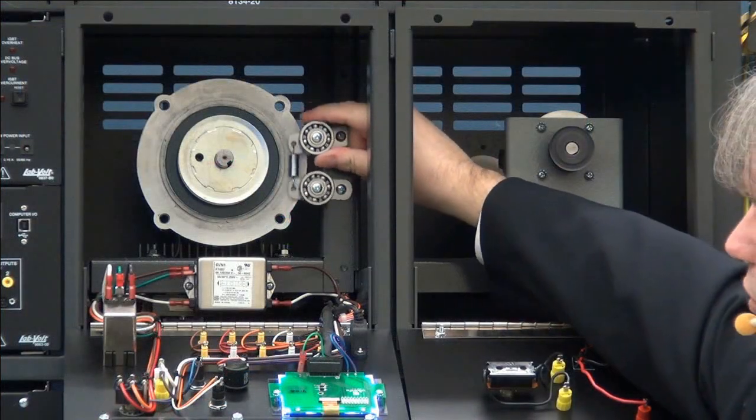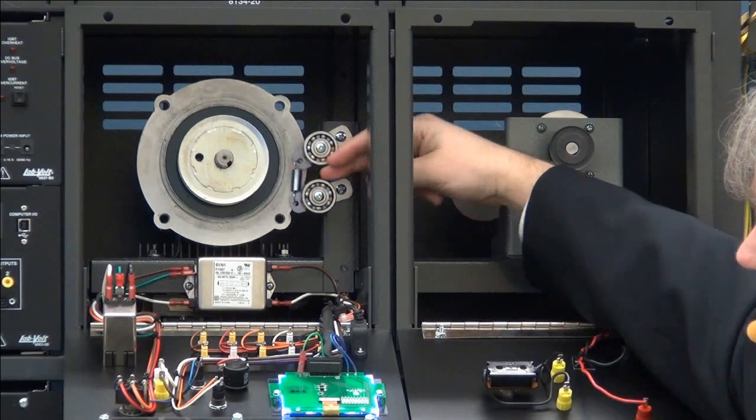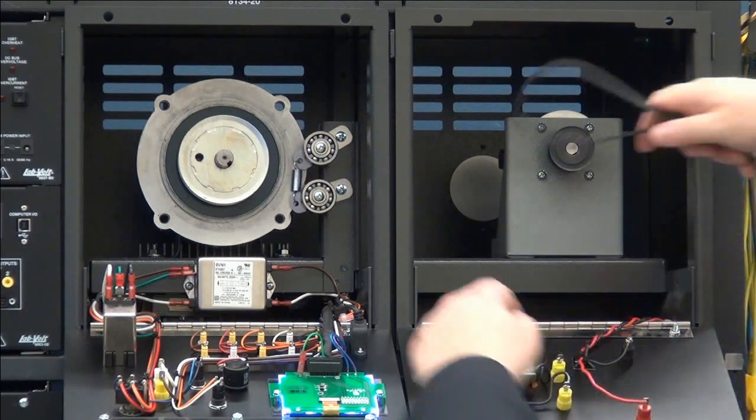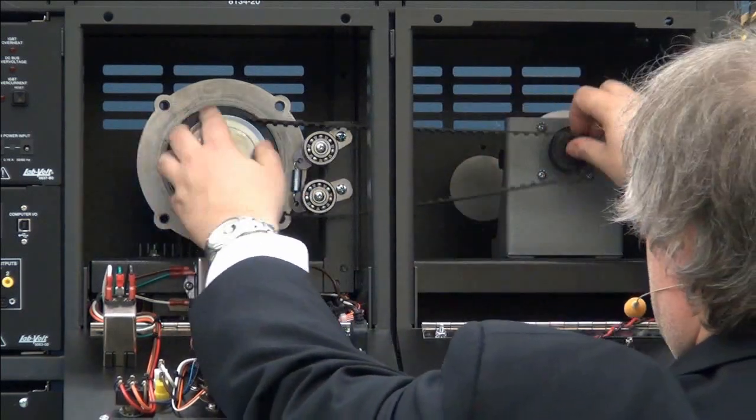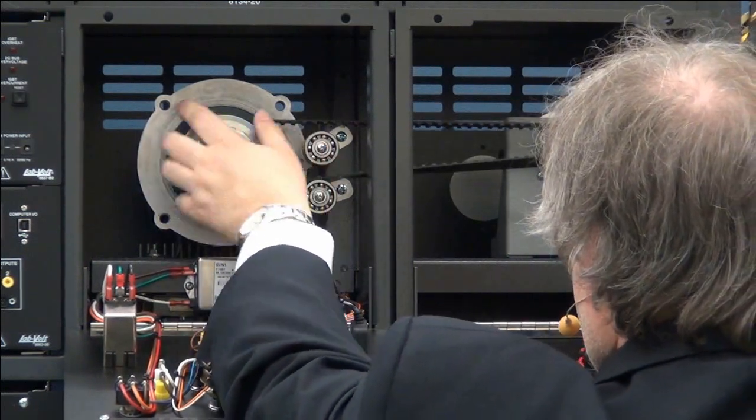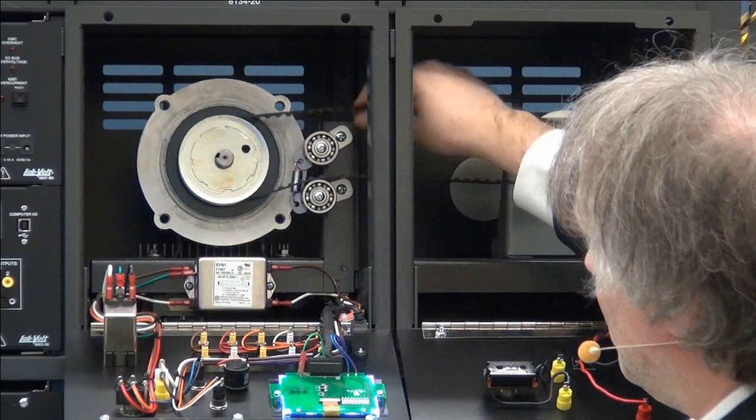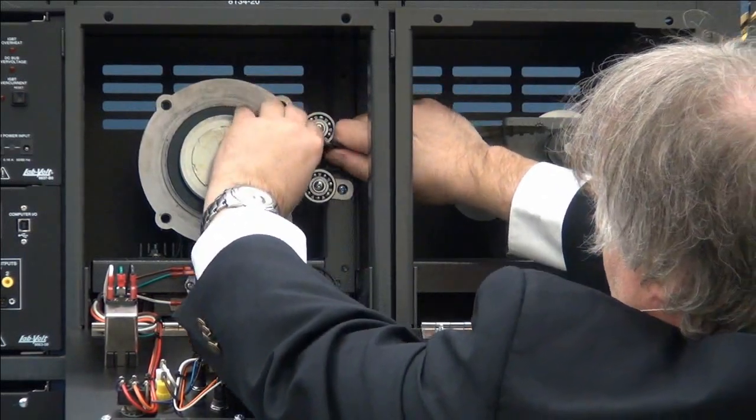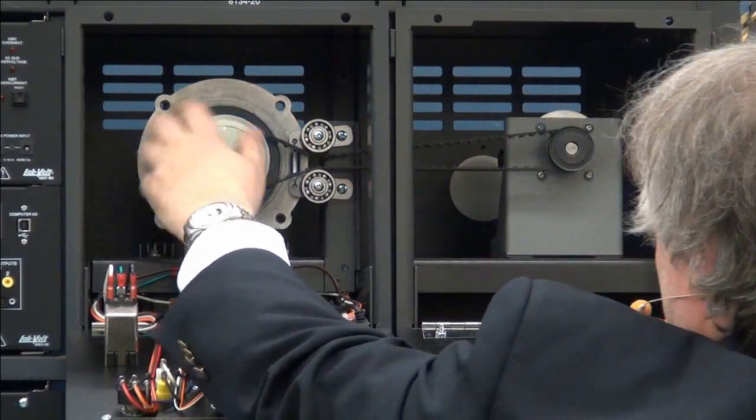We will use this spring-loaded mechanism to put more tension on the belt itself. So you will need to place your belt between the machines like this and then make sure that your belt passes between the tensioning bearings like this.